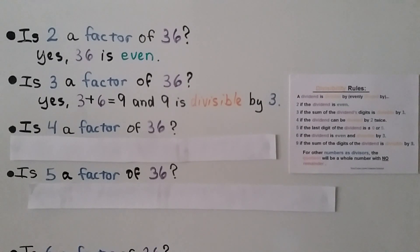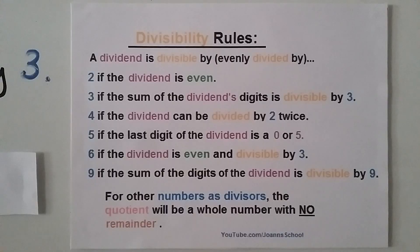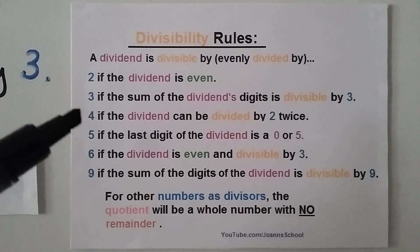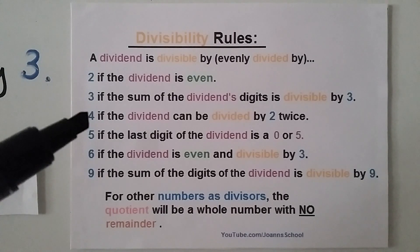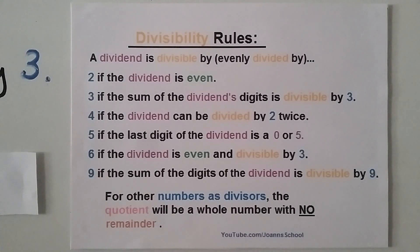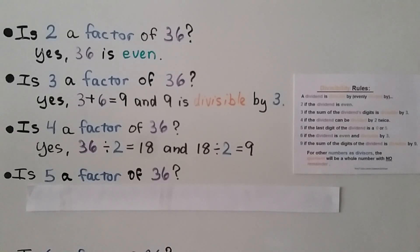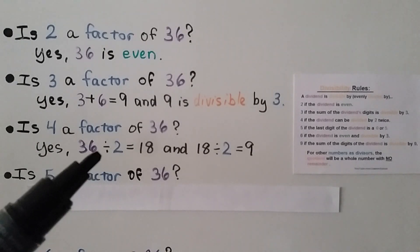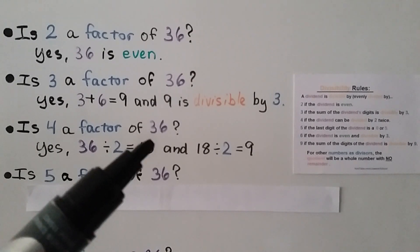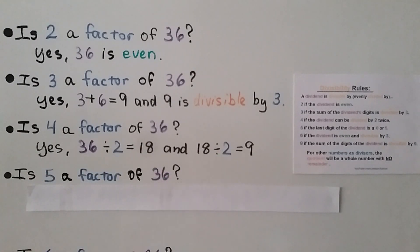Is 4 a factor of 36? The rule says it is if the number can be divided by 2 twice. We do 36 divided by 2, which equals 18, then take 18 divided by 2, which equals 9. They divide evenly, so yes — 4 is a factor of 36.